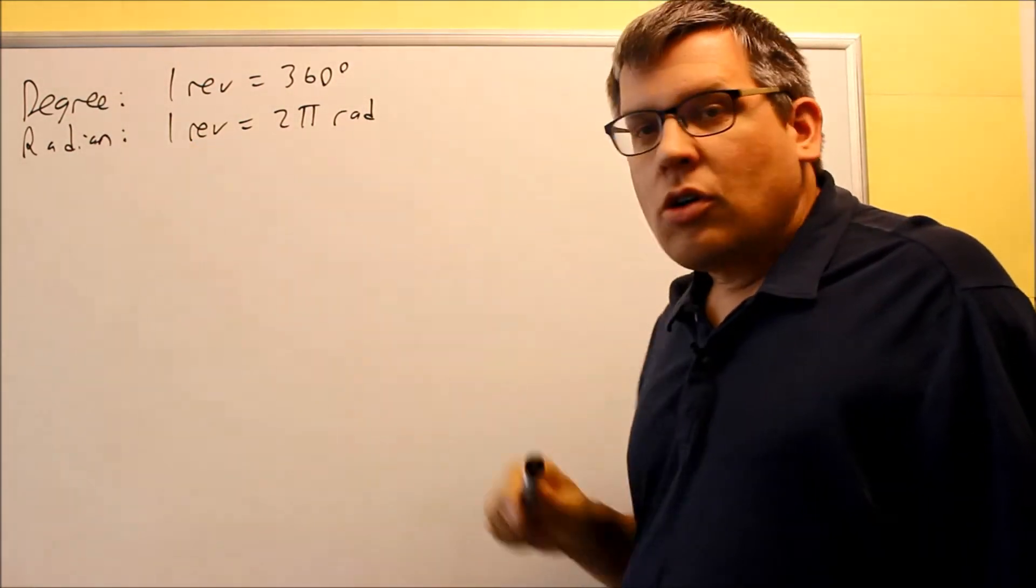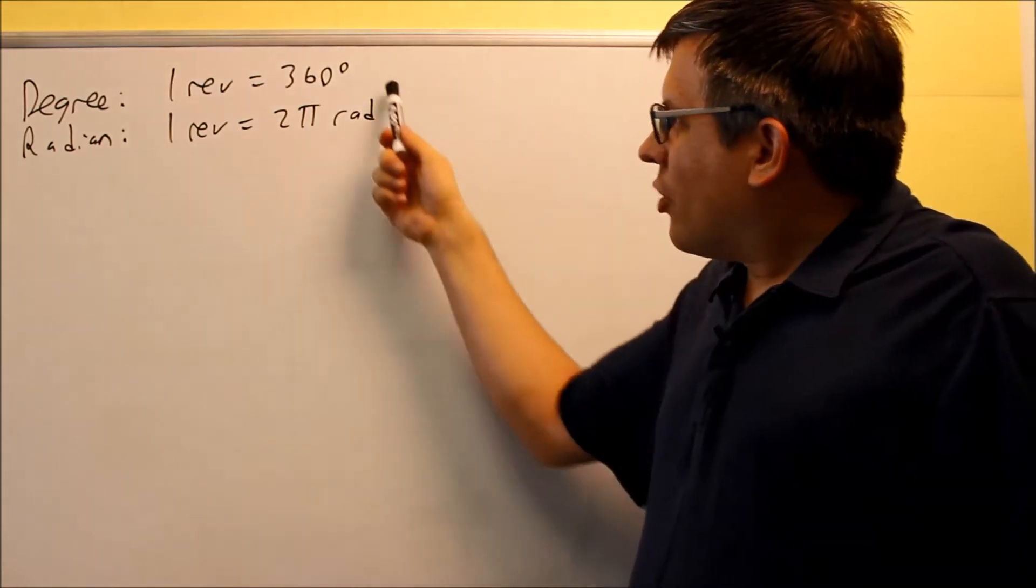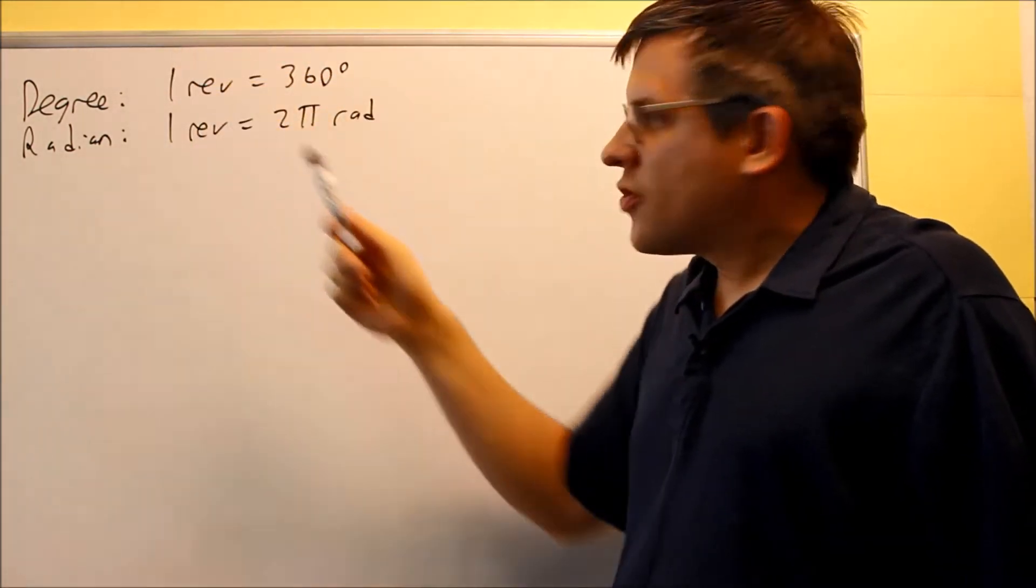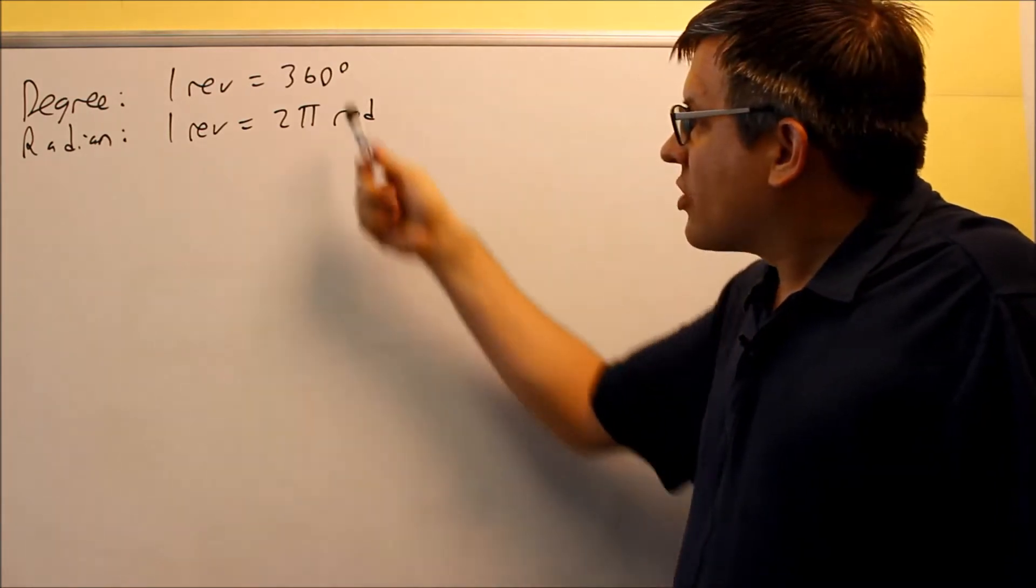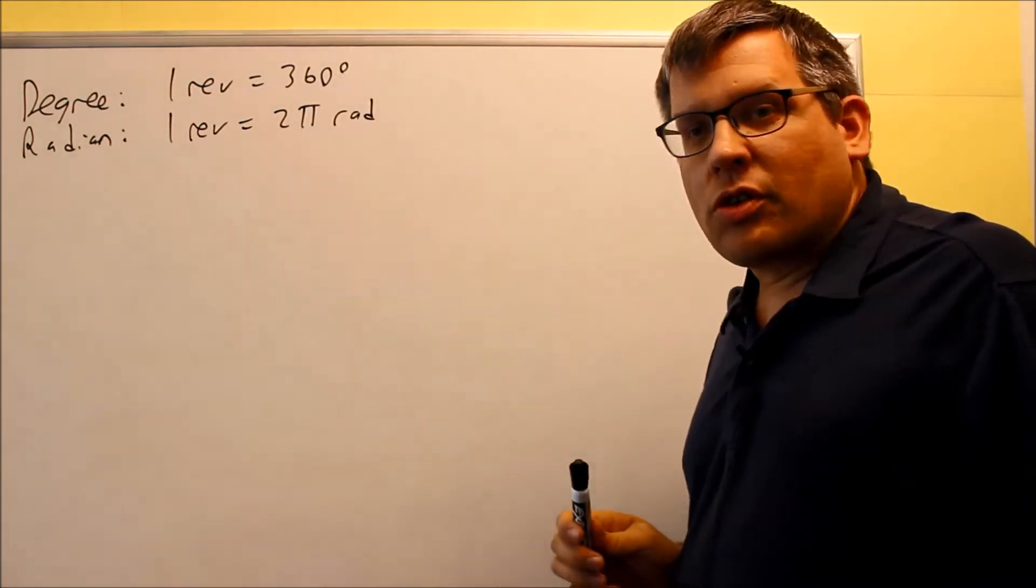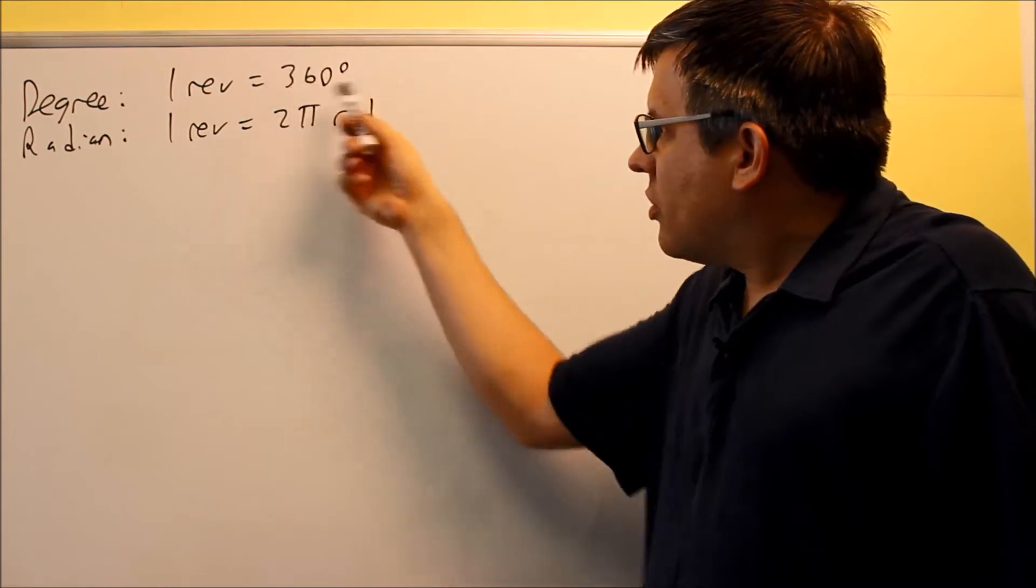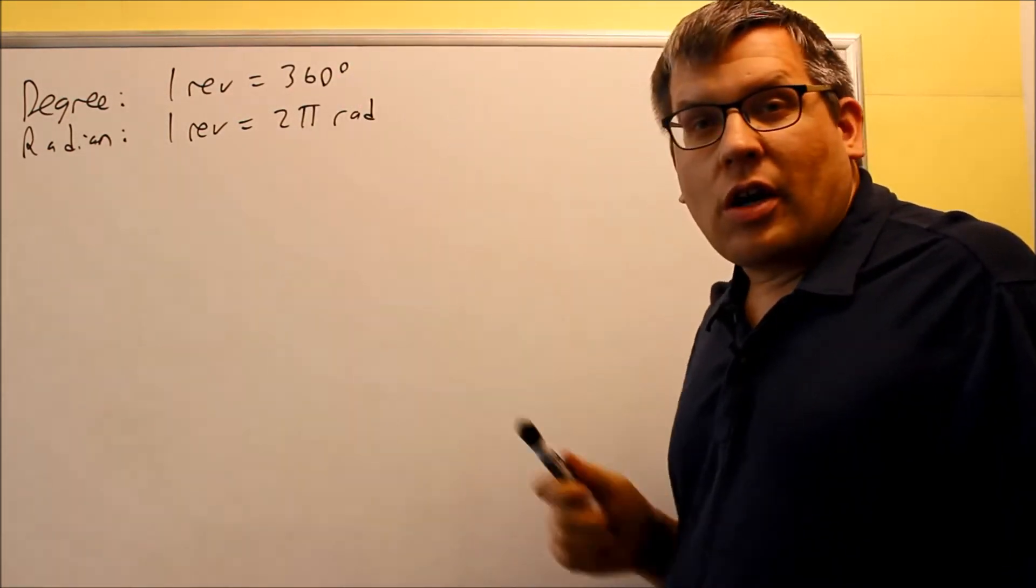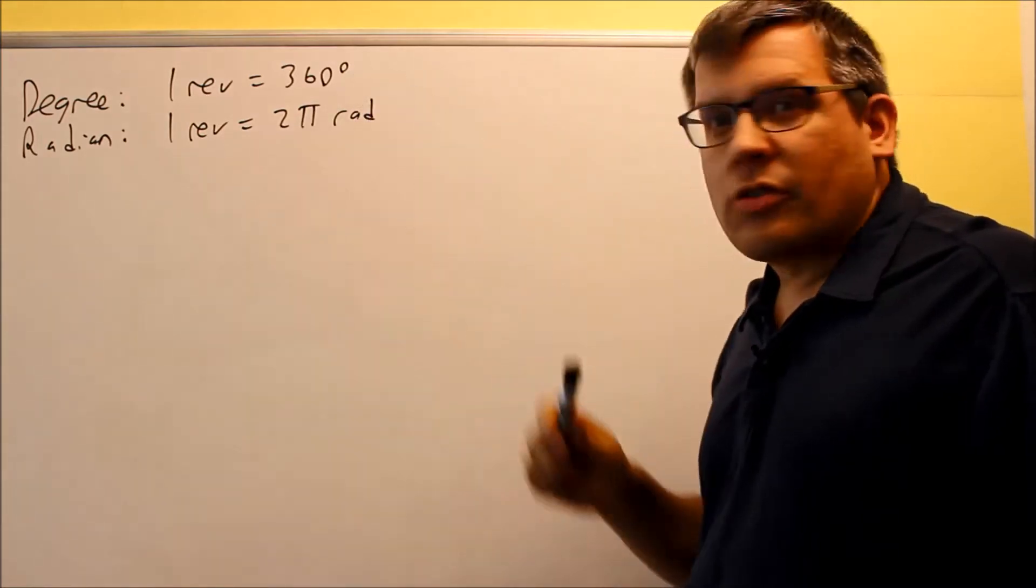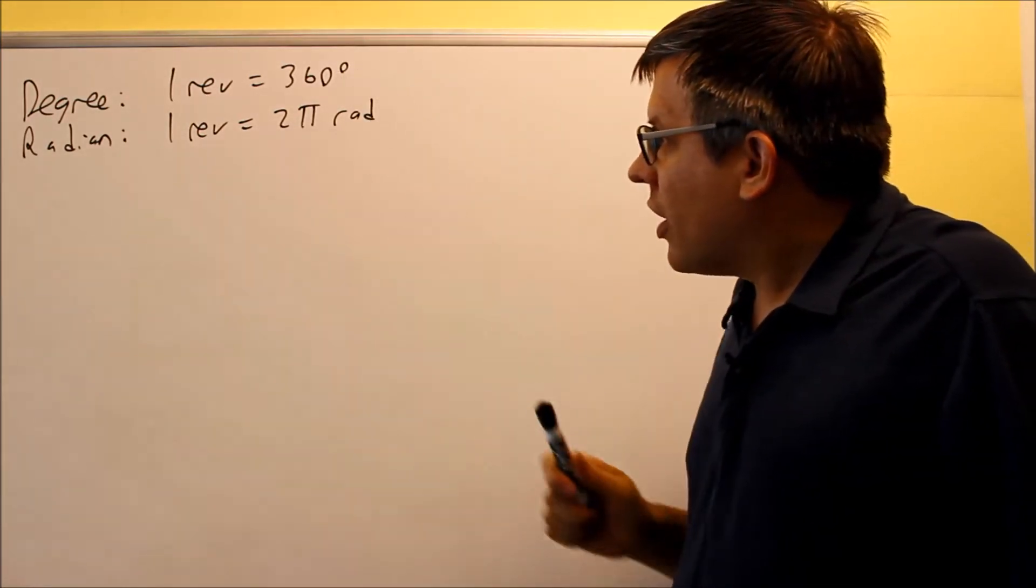We can either use degrees or we can use radians. Degrees would be probably what you're most familiar with. One revolution or one trip around a circle, that's going to be a total of 360 degrees. So the 360 is believed to come from the Babylonians, who basically based their year off of 360 days, that's believed where that came from.